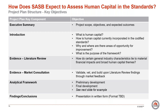So how does SASB expect to assess human capital and the standards through this project? We have provided an overview of the key project plan components, bucketed into three main parts. The first part is answering fundamental key questions about human capital, such as: what is human capital? How is human capital currently incorporated in the codified standards? Why and where are there areas of opportunity for improvement? And what is the purpose of the framework? The second key component is gathering evidence. We plan to accomplish this through a literature review phase to ensure that our work is evidence-based, and market consultations to ensure our work is market-informed. The literature review phase intends to identify broad human capital themes, both known and evolving issues, and tie those to general industry characteristics and potentially financially material impacts. After this phase, we have a market consultation in order to validate, vet, and build upon our literature review findings through market feedback.